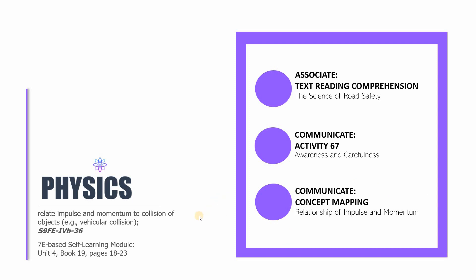It's just that we're now proceeding to pages number 18 to 23. Our learning competencies is still the same — to relate impulse and momentum to collision of objects, for instance, vehicular collision. This session is divided into the following parts: Associate Text Reading Comprehension, which is about the science of road safety, based on a research about content-based teaching or CBT. The second part is Communicate Activity 67, about awareness and carefulness. And the last part is Communicate Concept Mapping, where you'll think about the relationship of impulse and momentum.